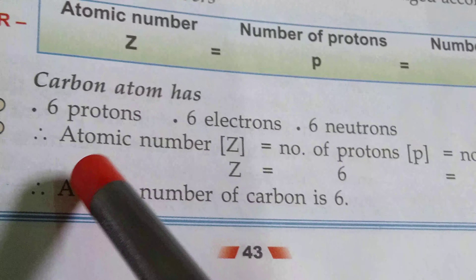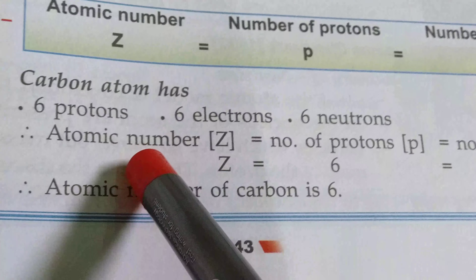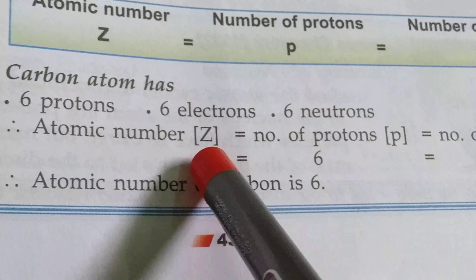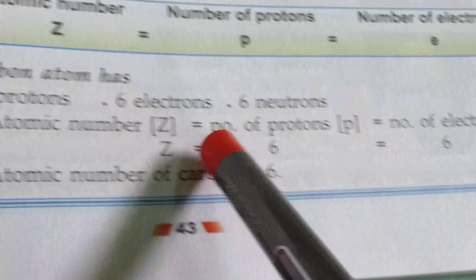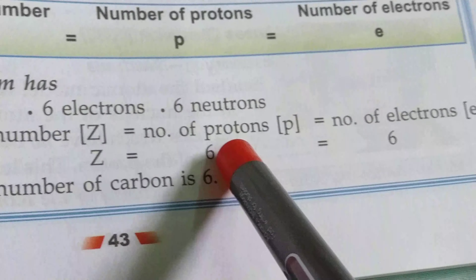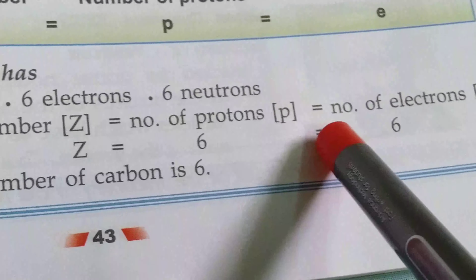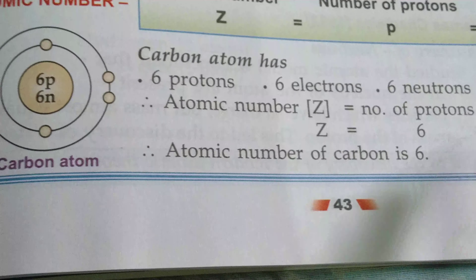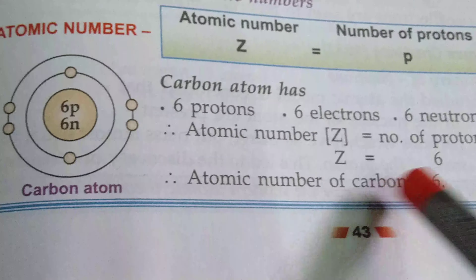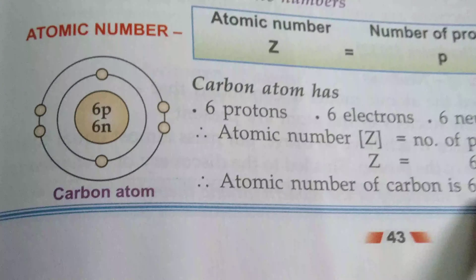Look at the book. Atomic number is denoted by capital Z. It is equal to the number of protons and equal to the number of electrons. So the atomic number of carbon is 6.